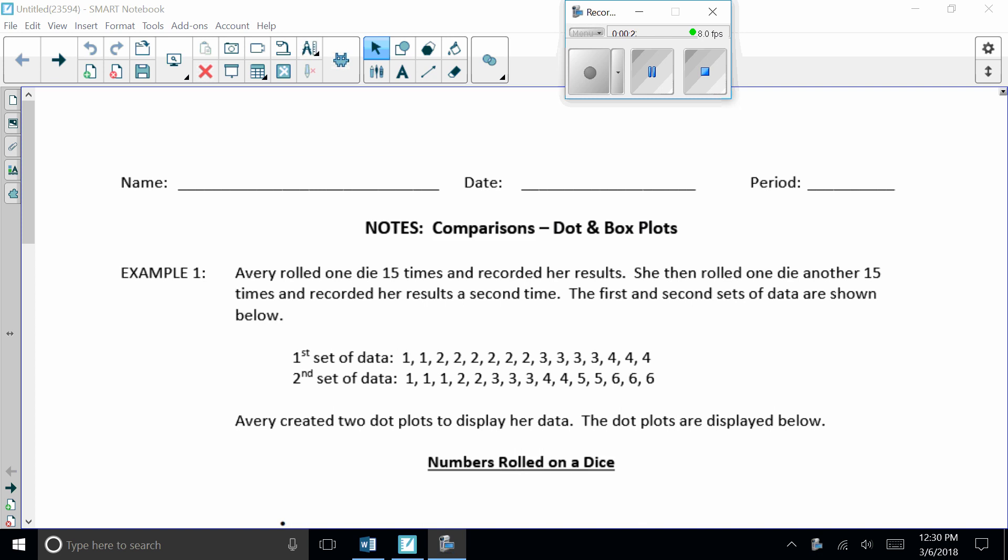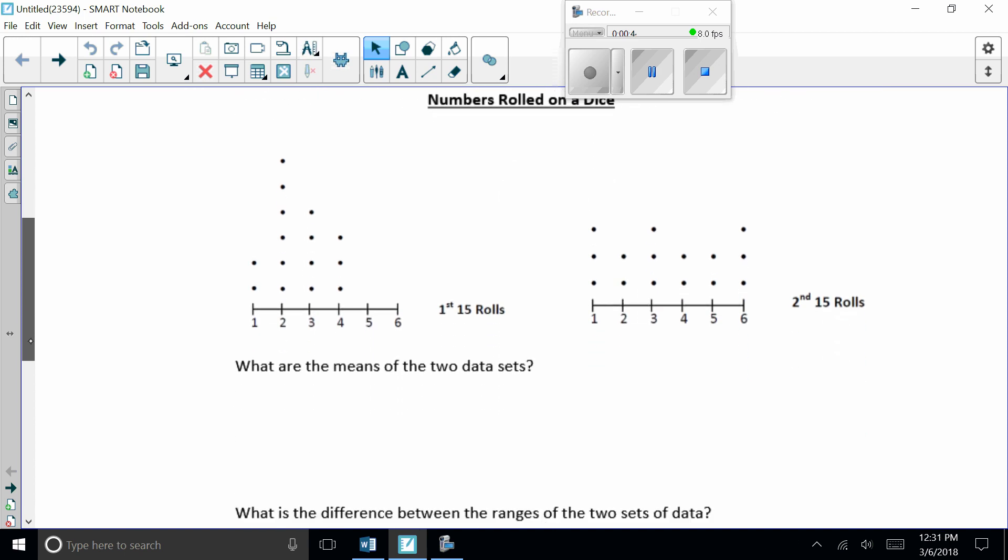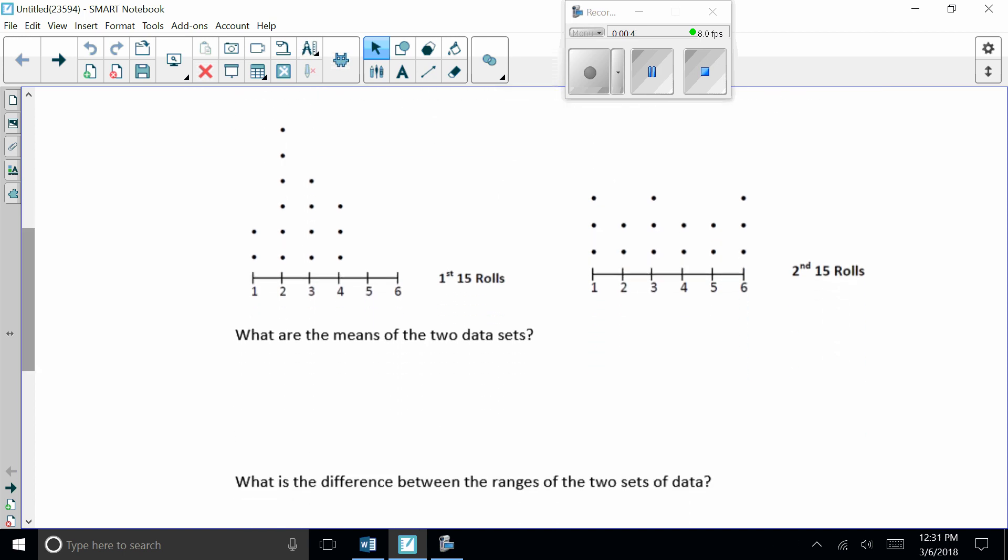So now we're going to show you how to compare them once we know how to find specific pieces of information from them. So example one says, Avery rolled one die 15 times and recorded her results. She then rolled another die another 15 times and recorded her results a second time. The first and second sets of data are shown below. Question number one says, what are the means of the two sets of data? So remember, a mean is another word for the average.